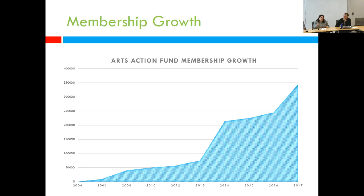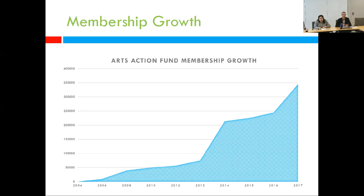We went to a lot of other national membership-based arts organizations and suggested that they similarly make all of their members Arts Action Fund members. One of the advantages a lot of groups jumped on is that there are communications about political activity that a C3 cannot make to its members — for example, the Congressional Arts Report Card scorecard. But if their members are also members of our organization, we can make that direct communication and let them know about political information on candidates, without getting the other national organization in trouble.